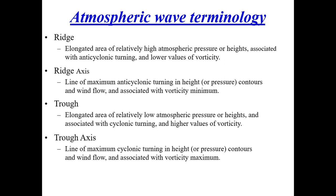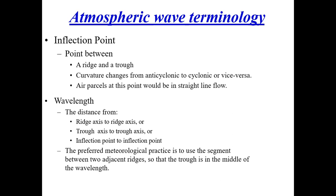I'm going to show you what this looks like — a quick introduction on the terms: ridge, ridge axis, trough, and trough axis. Another important term is the inflection point — the point between a ridge and a trough. The curvature changes at the inflection point from anticyclonic to cyclonic flow or vice versa. Air parcels at the inflection point are moving in straight-line flow with no curvature in the wind. Wavelength is the distance from a ridge axis to a ridge axis, or a trough axis to a trough axis, or inflection point to inflection point.